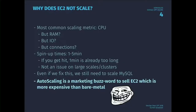So why does EC2 not scale? The most common scaling metric would be out-of-the-box scaling by CPU. But what about memory usage? What about IO? What about connections? An application doesn't always have to scale with CPU, but there will be cases where it will have to scale according to memory usage. Because EC2 uses VMs, the spin-up times can take anywhere between one and five minutes, if you're lucky.